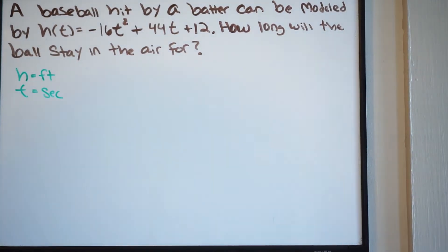Okay, so in this example we're dealing with another quadratic word problem. So let's go ahead and read it, and then we'll go ahead and set it up. It says a baseball hit by a batter can be modeled by the following function. And it says here H of T. So H here represents the height, T represents the time. And I have it listed here. Height is going to be in feet. Time is going to be in seconds. So in this case, height is a function of time. And it's asking, how long will the ball stay in the air for?